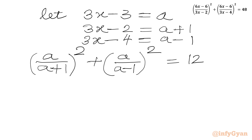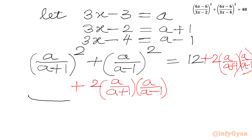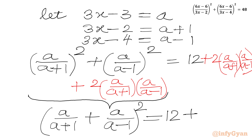Now we will use an algebraic manipulation step. I will add the product of these two brackets times 2 on both sides. So I will write plus 2 times (a over a+1) times (a over a-1) on the left side, and also plus 2 times (a over a+1) times (a over a-1) on the right side. This gives us (a over a+1) plus (a over a-1), whole squared on the LHS.